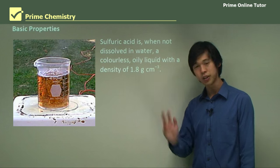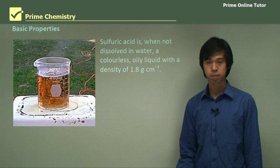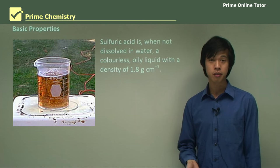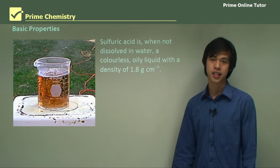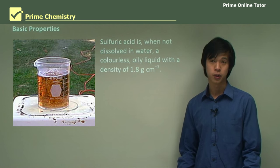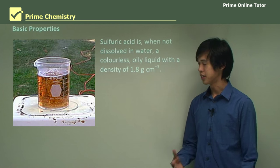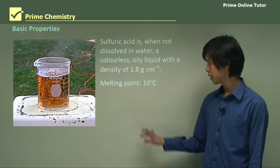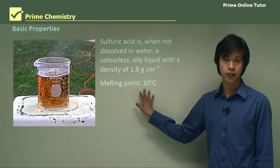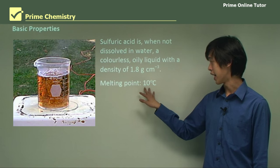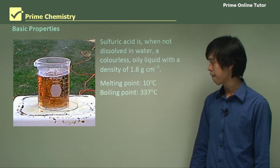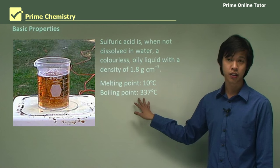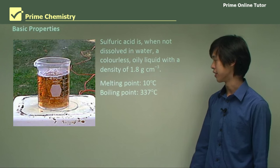So it's almost twice as dense as water, because water is about 1 gram per centimetre cubed. You can see that it's quite a dense and viscous liquid. Its melting point is fairly high at 10 degrees Celsius, and its boiling point is very high — much higher than water — at 337 degrees Celsius.